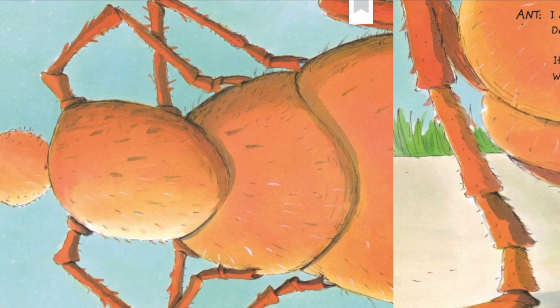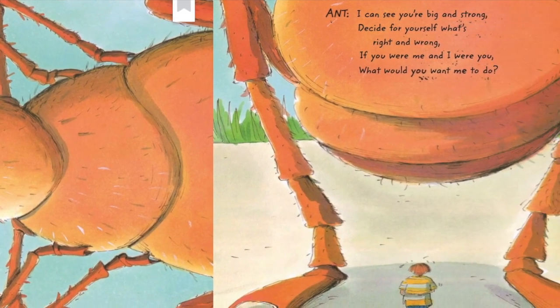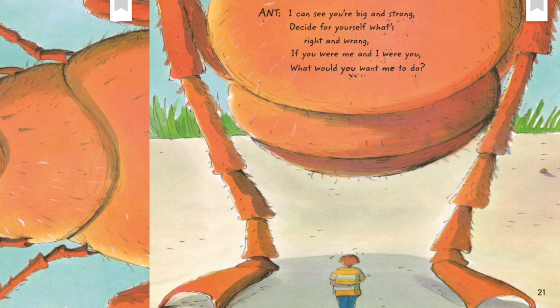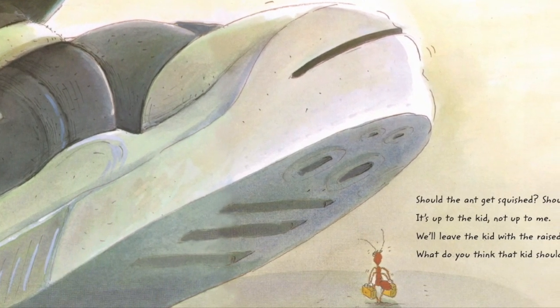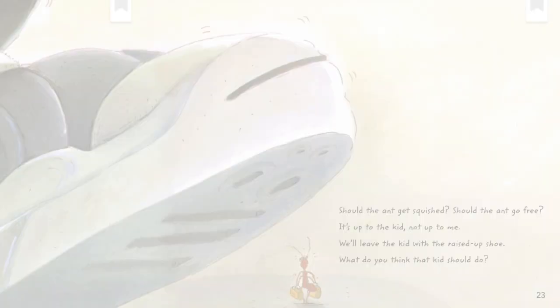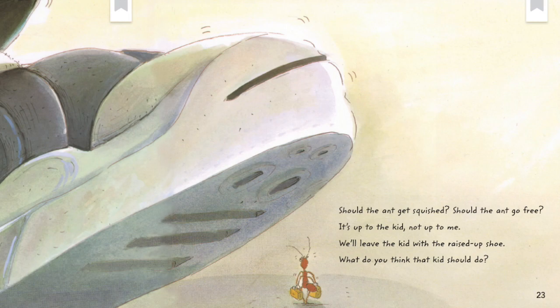I can see you're big and strong. Decide for yourself what's right and wrong. If you were me and I were you, what would you want me to do? I think he wants the boy to realize that if he was the small one, he wouldn't want to be squished. Should the ant get squished? Should the ant go free? It's up to the kid, not up to me. We'll leave the kid with the raised up shoe. What do you think that kid should do? The ending of this story is so interesting — we never actually find out what happens to the ant. Does the boy squish him? Does the ant change his mind? Why do you think the author decided to do that? I think the author wanted the reader — that's us — to make our own decision for what happened.